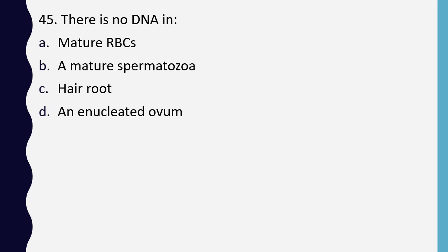Question 45. There is no DNA in: mature RBC, a mature spermatozoa, hair root, or enucleated ovum. The correct answer is option A: in a mature RBC there is no DNA.